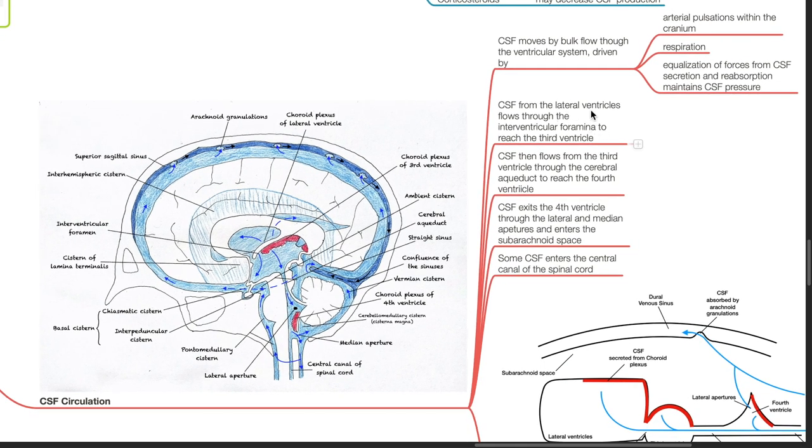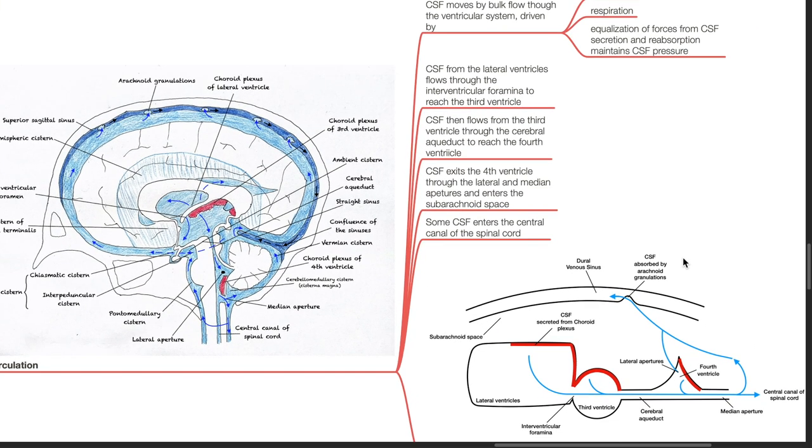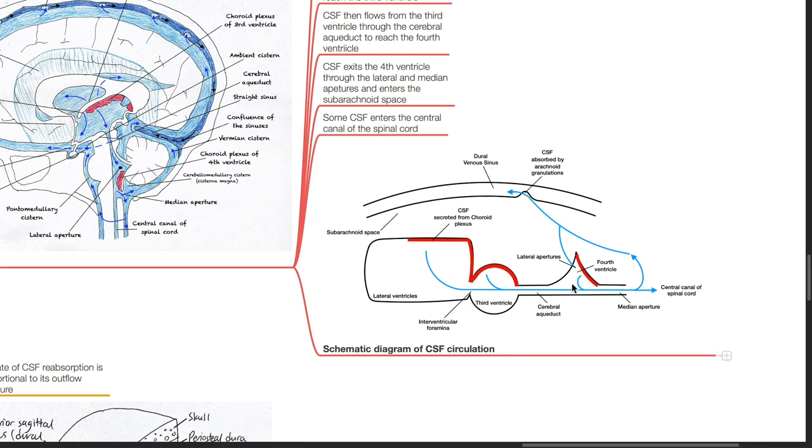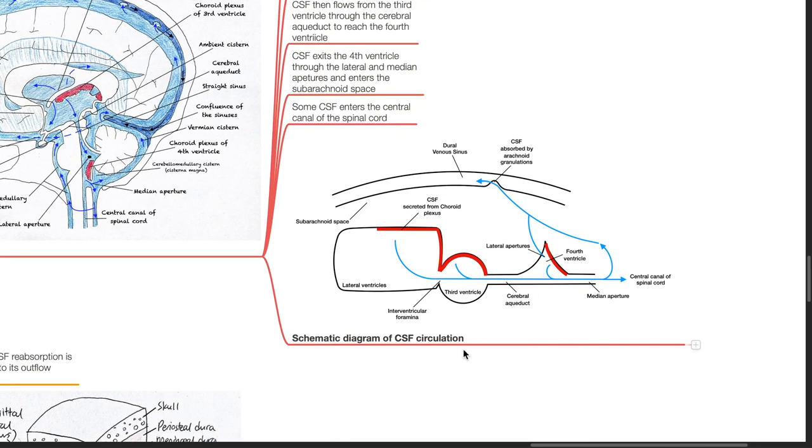CSF from the lateral ventricles flow through the interventricular foramina to reach the third ventricle. CSF then flows from the third ventricle through the cerebral aqueduct to reach the fourth ventricle. CSF exits the fourth ventricle through the lateral and median apertures and enters the subarachnoid space. Some CSF enters the central canal of the spinal cord. This is a schematic diagram of CSF circulation.